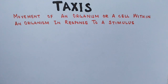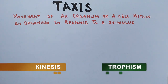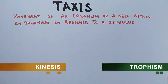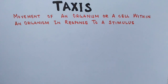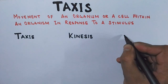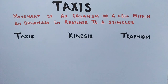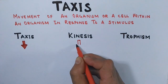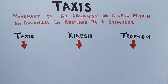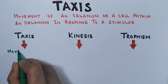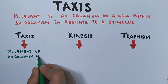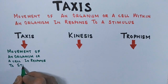What makes taxis different from kinesis and tropism? To understand the taxis phenomenon, all three terms — taxis, kinesis, and tropism — are interrelated in the context of movement. We will define a property of each phenomenon and then see why the difference exists. Taxis is the movement of an organism or a cell in response to a stimulus.